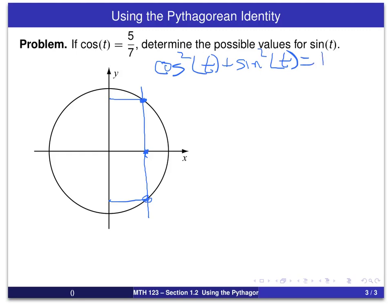And we get 5 sevenths quantity squared plus sine squared of t equal to 1. And now, basically, our first step is to solve for sine squared of t.